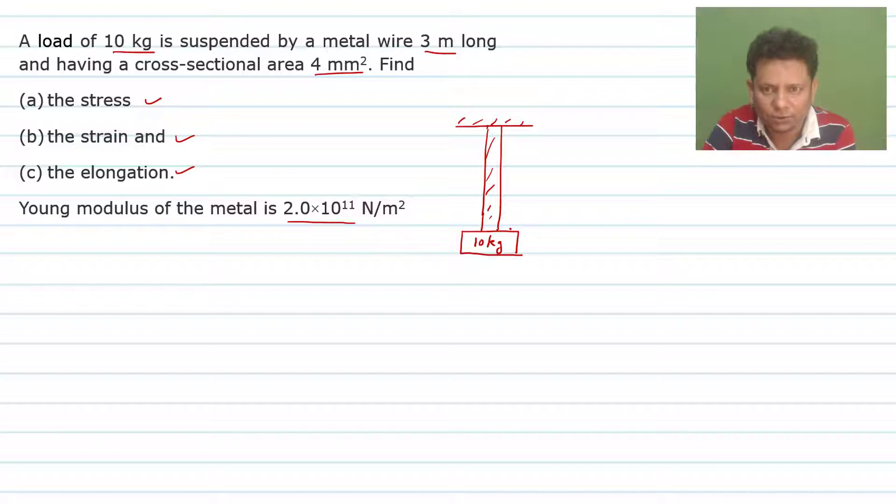So stress will be equal to force divided by area. Force is Mg, which is 10g, and the area is 4 mm square. So we can write that as 4 × 10⁻⁶. Now it is converted into SI unit.